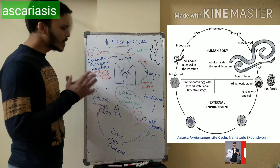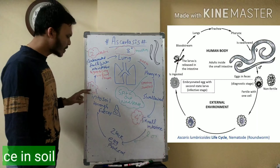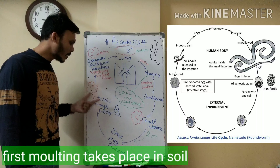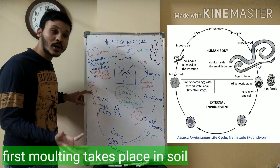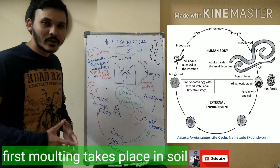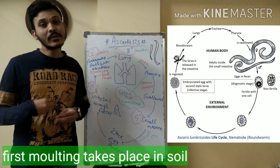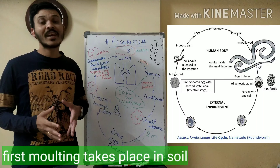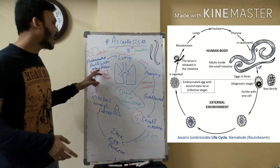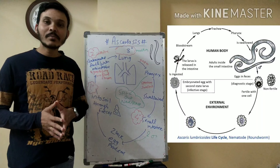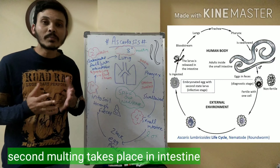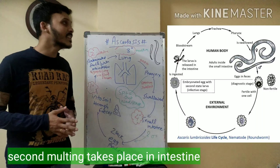Look at this. In this, first of all, the fertilized egg is put in the soil. The first larval stage stays in the soil. After this, through contaminated food and contaminated water, it enters the body. When it enters the digestive system, it goes into the intestine. In the intestine, there is perforation and it ruptures by entering the blood vessels, as you can see in the diagram.